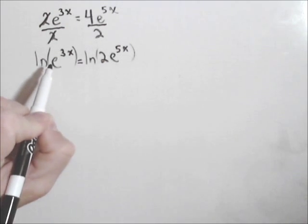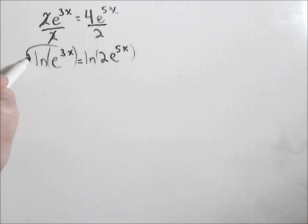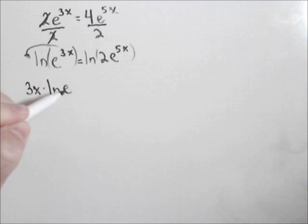Now on the left hand side it works out pretty nice. We can pull this exponent out front. We get 3x ln of e, or if you're familiar with the inverse properties of logs, it's actually just 3x because ln of e is one.